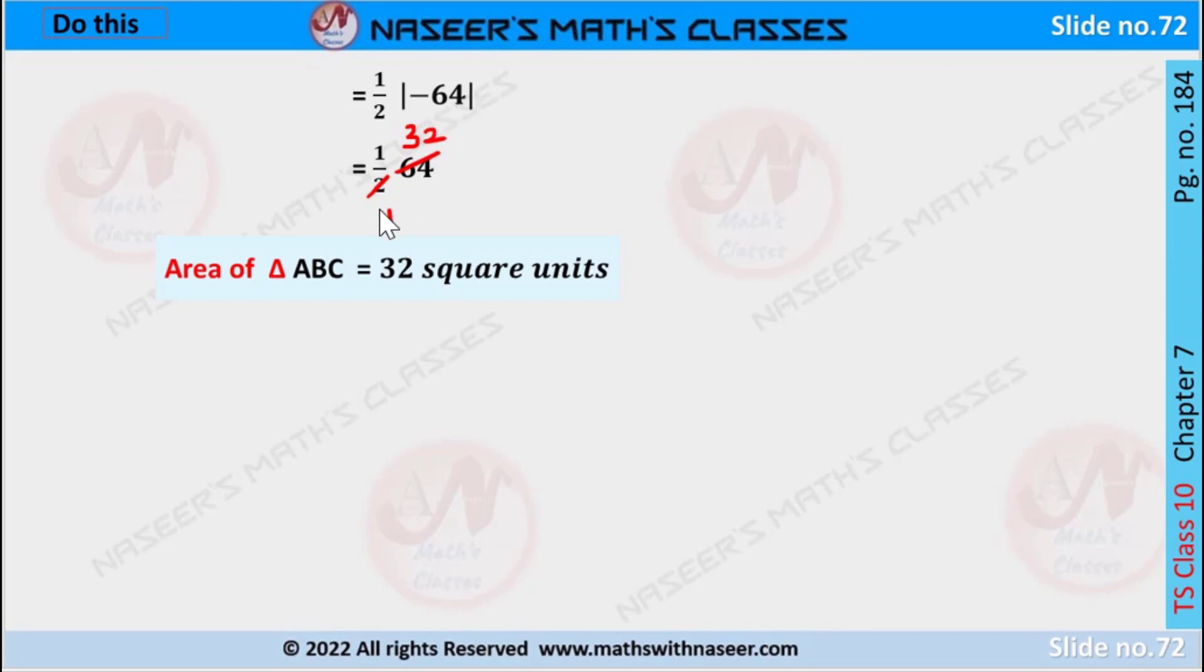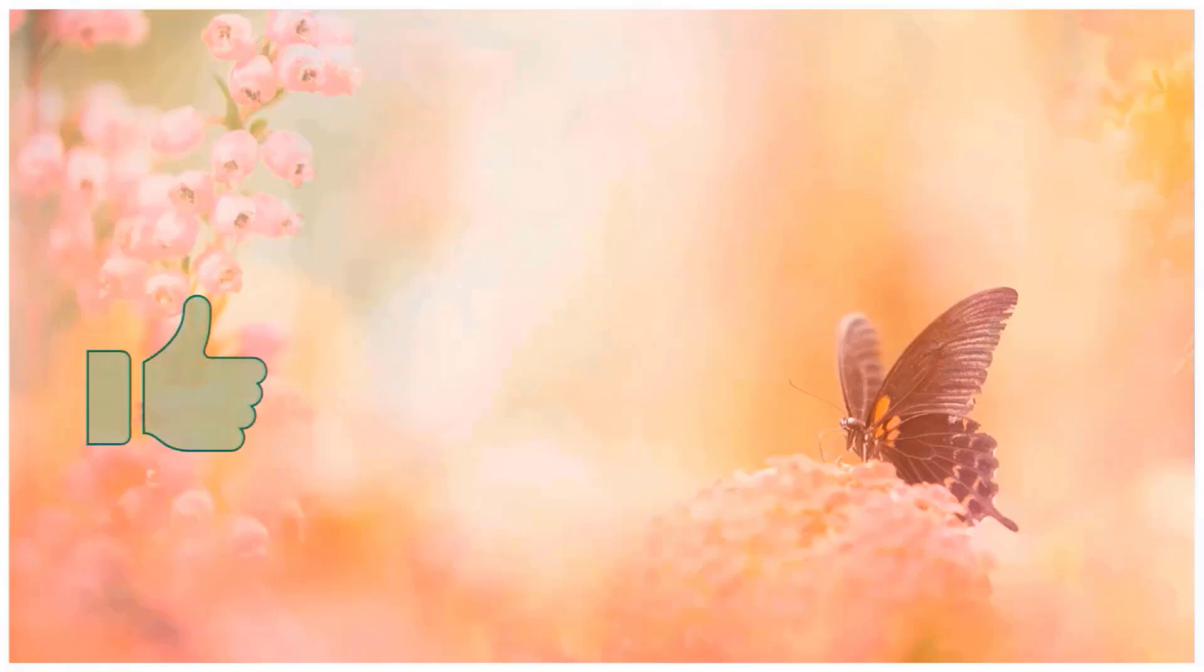Here we can divide 64 by 2. Therefore, the area of triangle is equal to 32 square units. Please like,